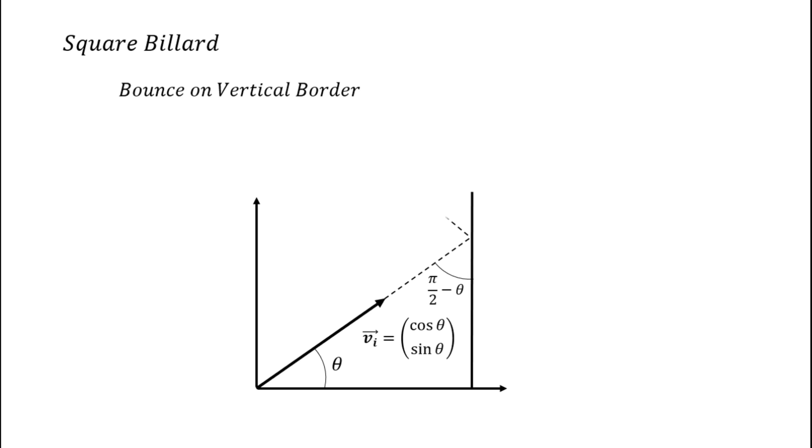Let's explore the impact of specular reflection inside the square, beginning with the vertical border. Let vi be the velocity vector defined by the angle theta and its coordinates cos theta and sin theta. So what happens to this vector if it bounces on the vertical border? It's just a geometrical problem. We can deduce complementary angles, and since it is a specular reflection, this is the same angle between the outcome vector and the vertical border. Then we just have to add the right angle value and we have the orientation of the reflected vector vr, which is pi minus theta. So this gives us minus cos theta and sin theta.